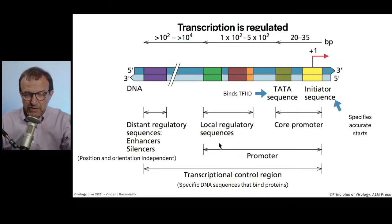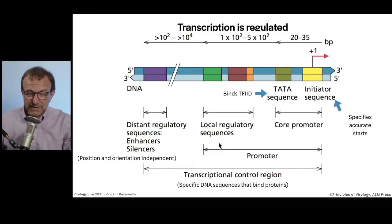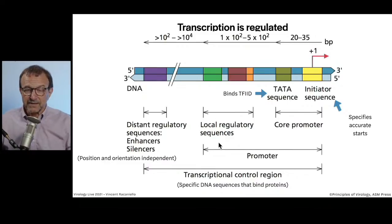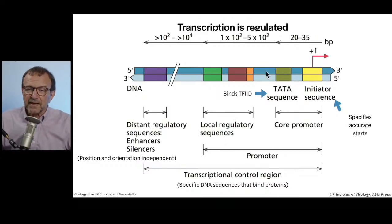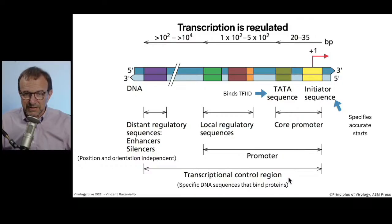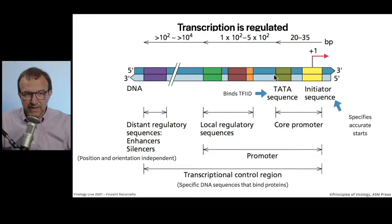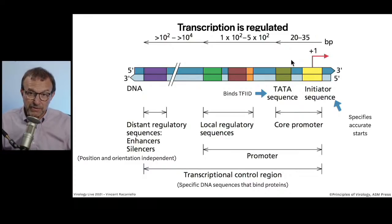Transcription is regulated very much so — it's the way we make sure the right proteins are made in the right place at the right time. You don't want all genes transcribed and translated. Think of cells that are not dividing — muscle cells or neurons. They don't need all the proteins involved in cell division, so those are turned off at the level of transcription. The promoter and proximal sequences are involved in regulating transcription. This is the anatomy of what we call a transcriptional control region — a DNA molecule with different colored elements involved in the regulation of transcription.